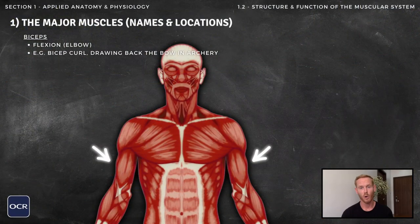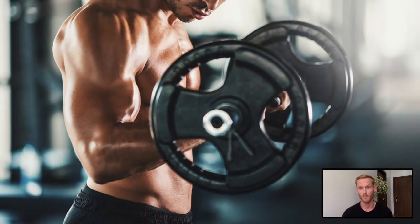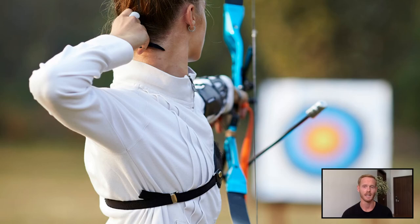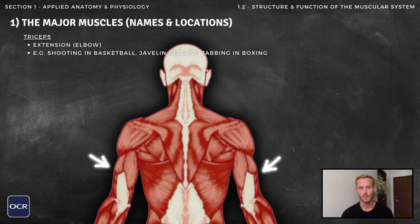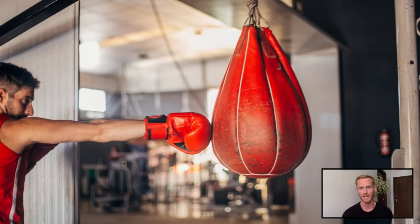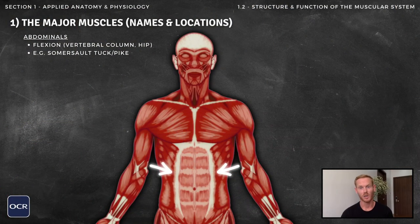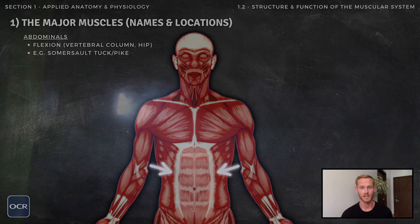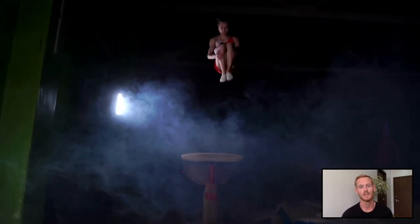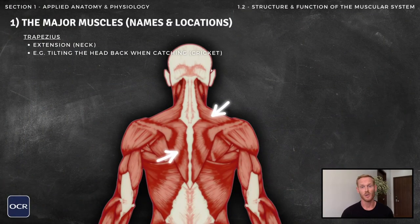The pectorals are also used in the execution of a discus throw or forehand drive in tennis. The primary role of the biceps, or biceps brachii, is to create flexion at the elbow joint, which can be seen when performing a bicep curl or drawing back the bow in archery. The triceps, or triceps brachii, are located opposite the biceps on the back of the arm. They create extension at the elbow, for example when shooting in basketball or jabbing in boxing.